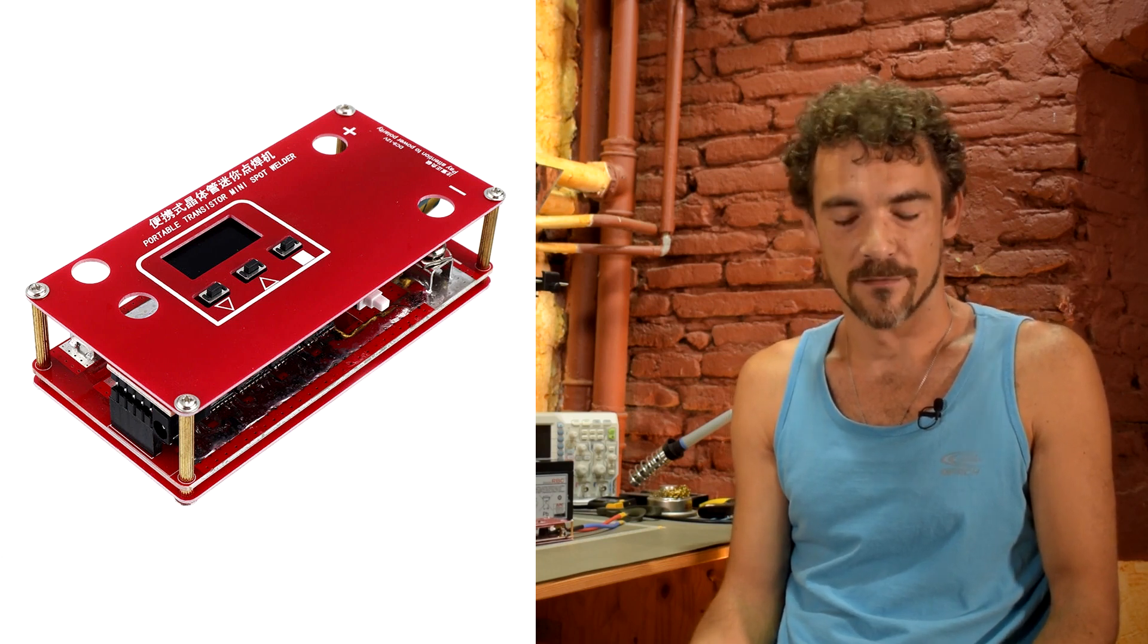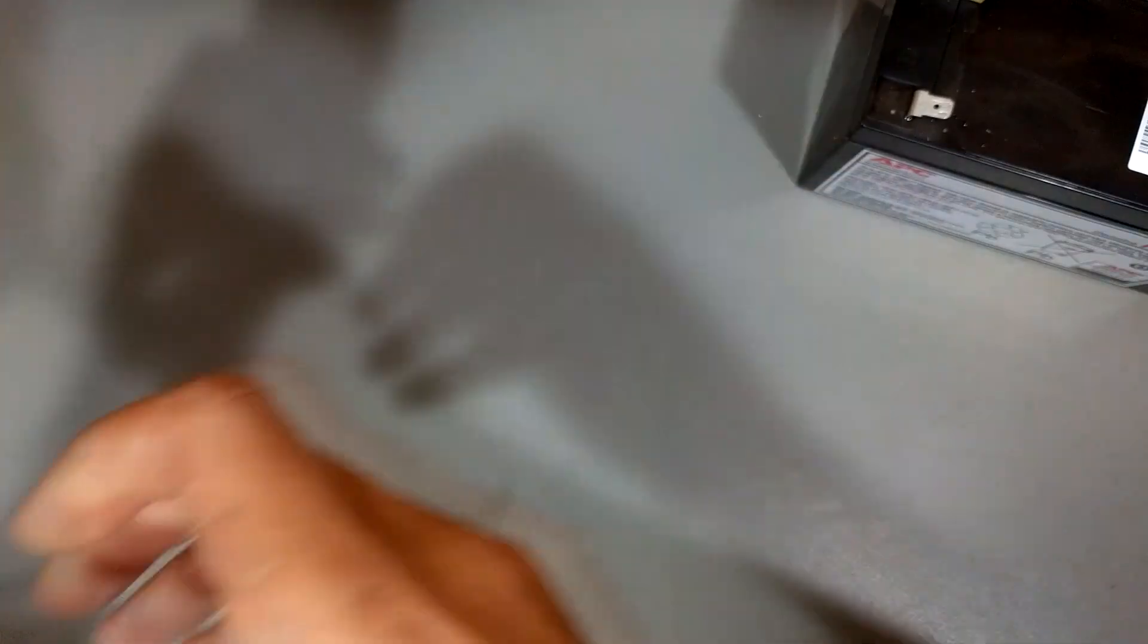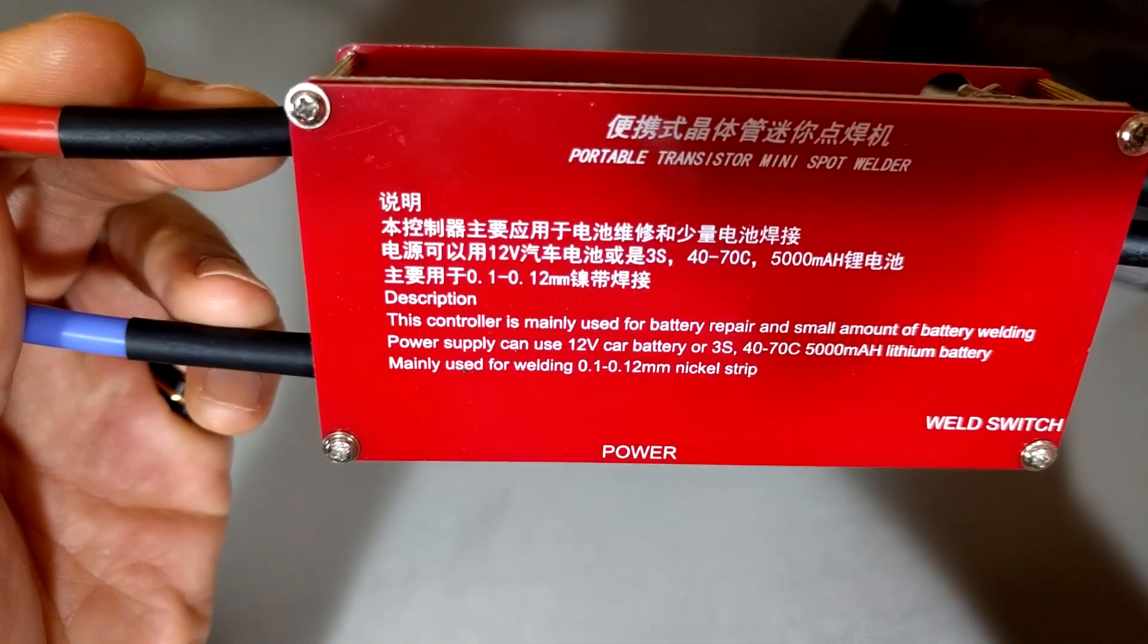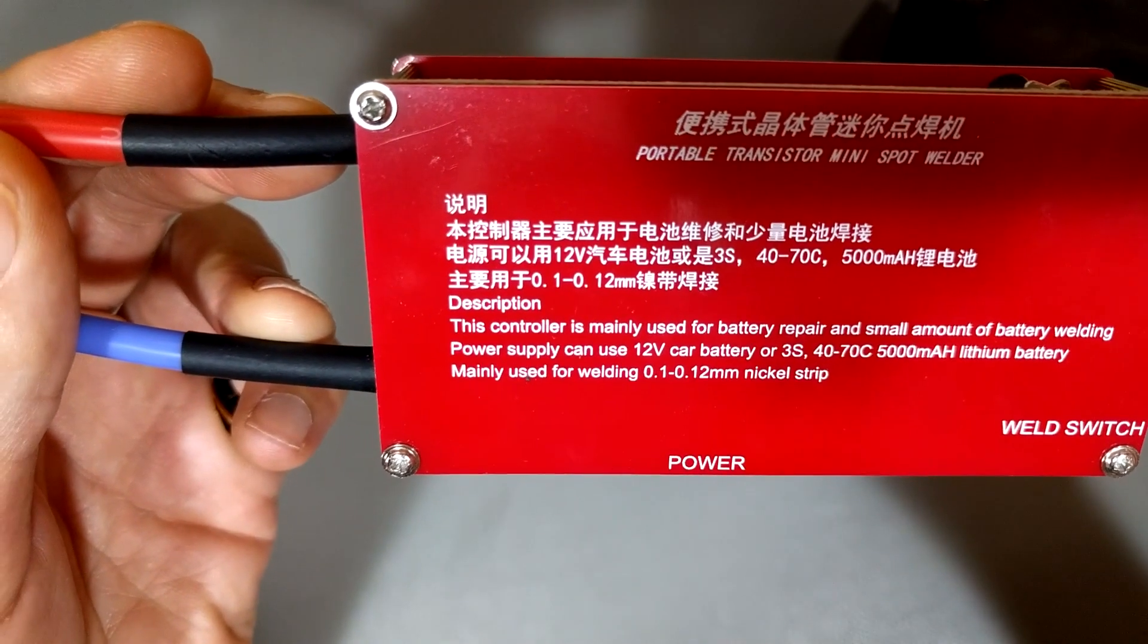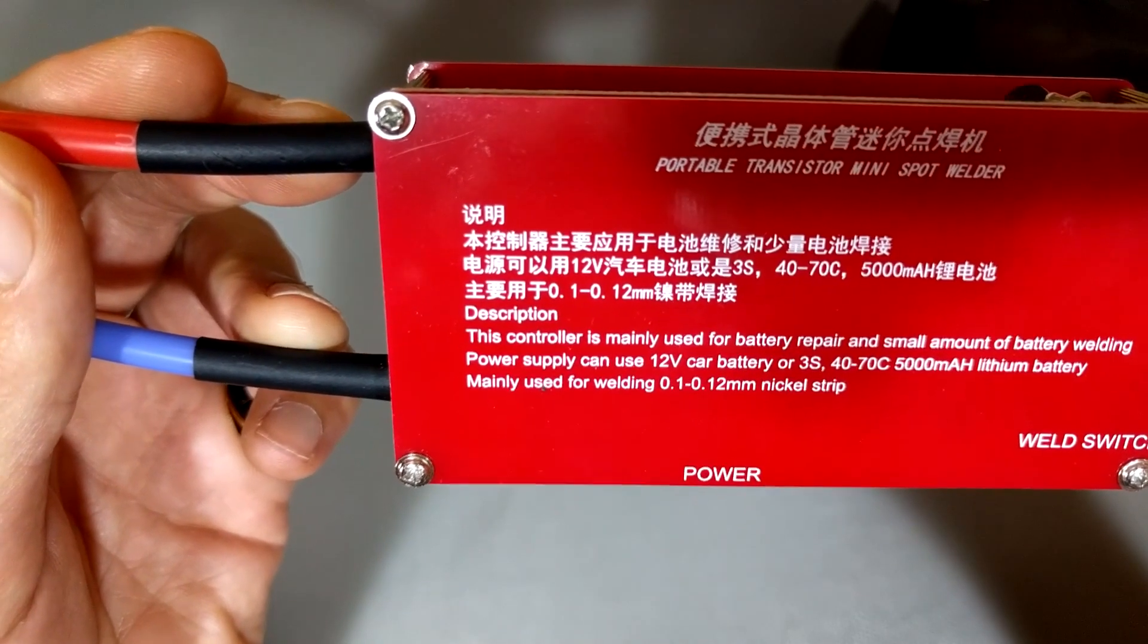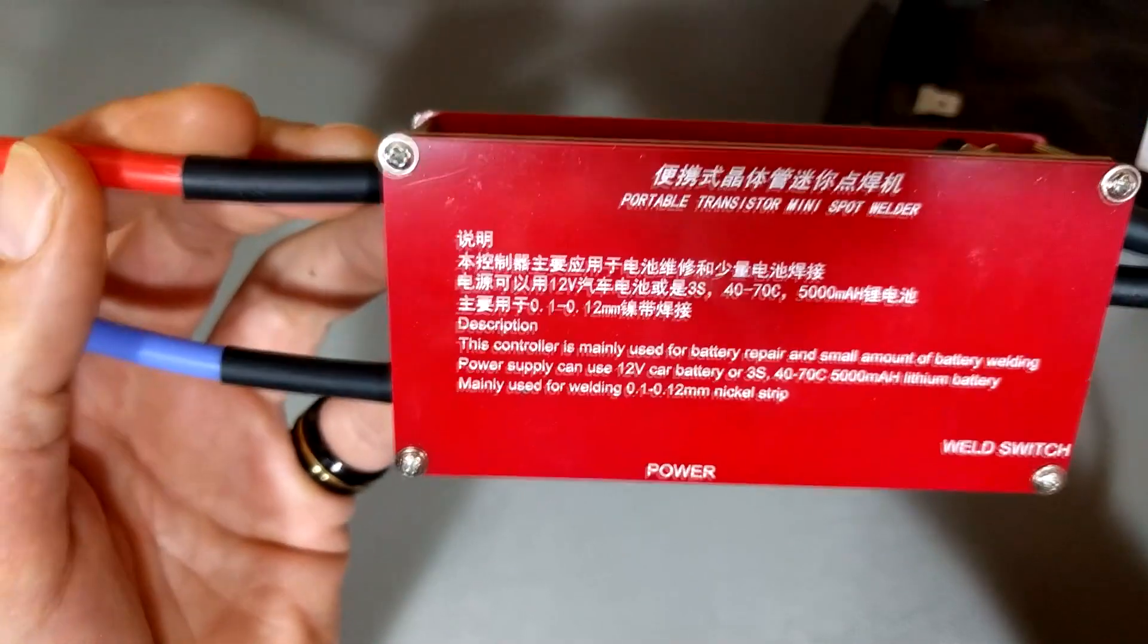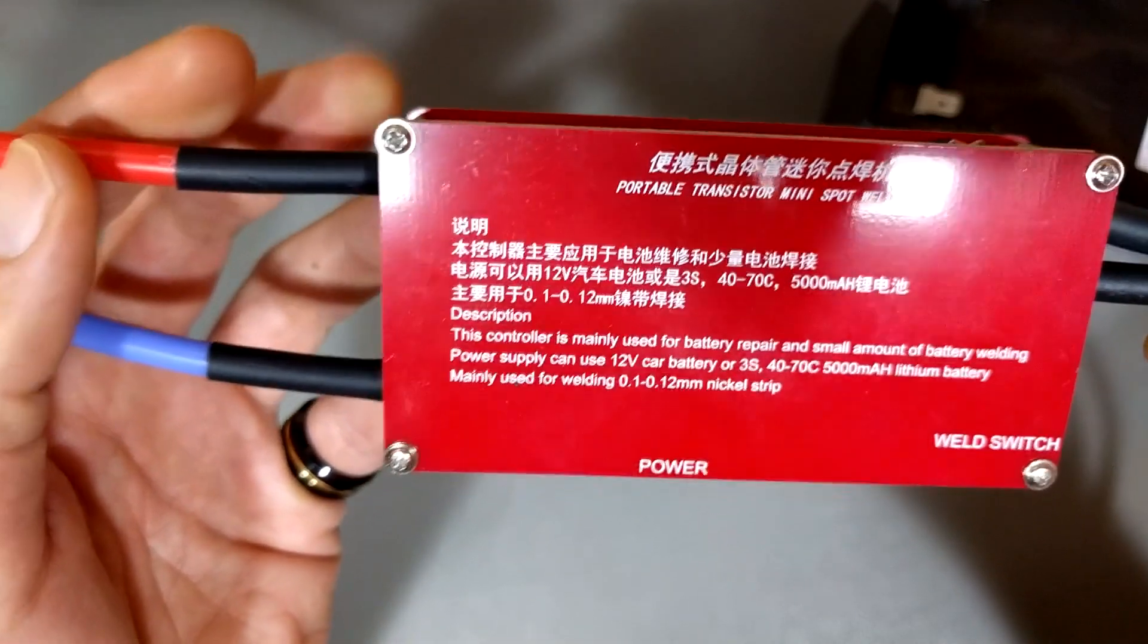I figured for 16 bucks, if I can get a little—for the amount of tab welding I do, which is not a whole lot—16 bucks if it works, that's pretty cool, right? So let's take a look at it. I'll explain a little bit about how it works and then we'll give it a test drive. This is our battery tab welder. You can see on the back here you have some interesting text. It says this controller is mainly used for battery repair and small amounts of battery welding—perfect for me.